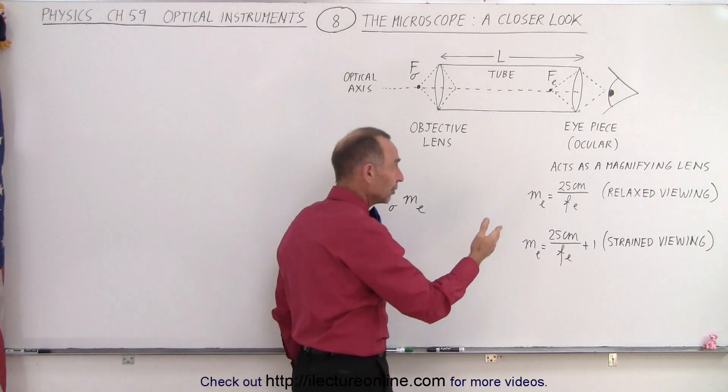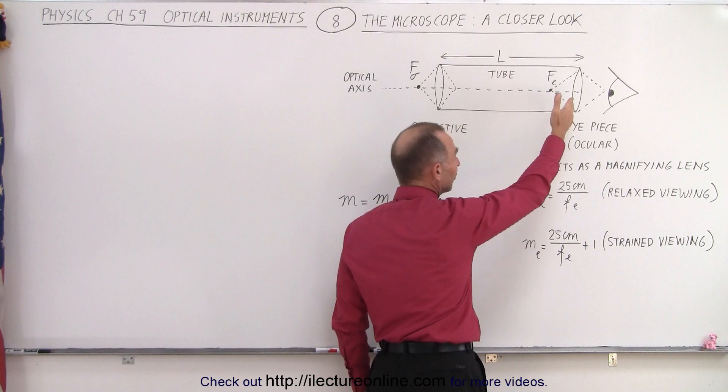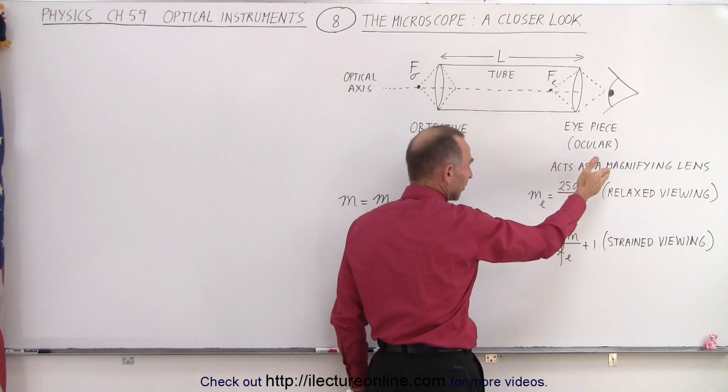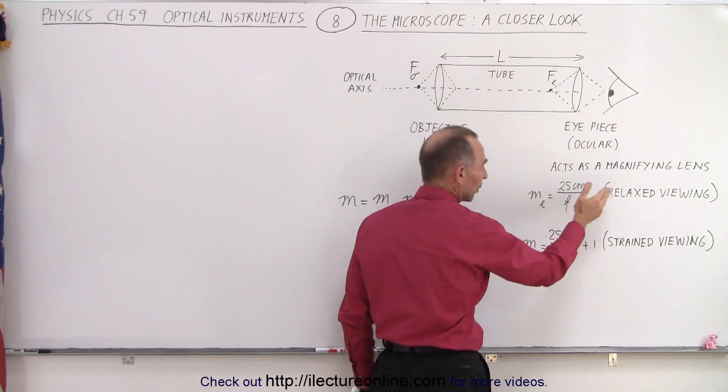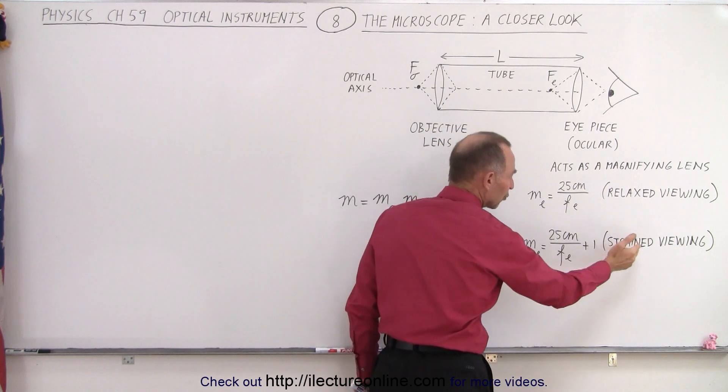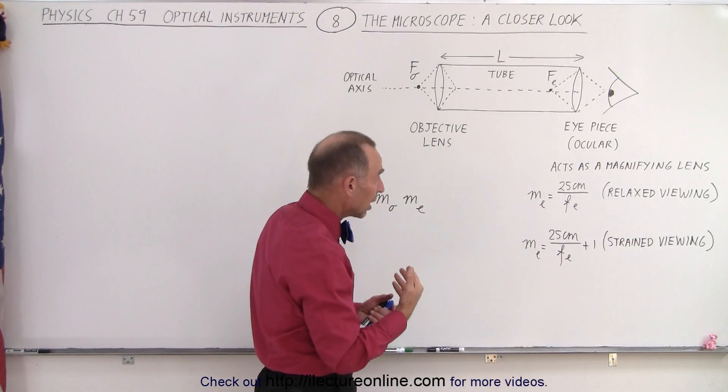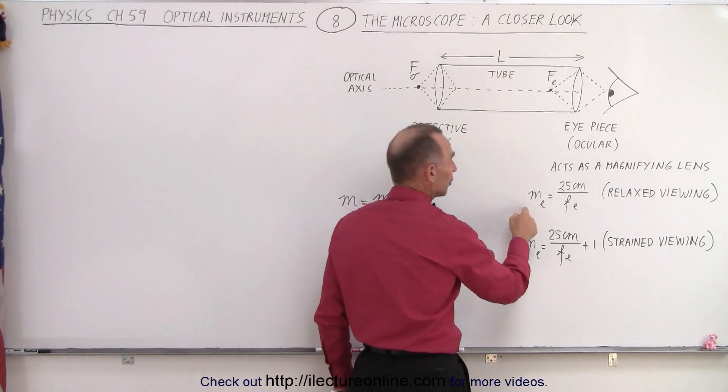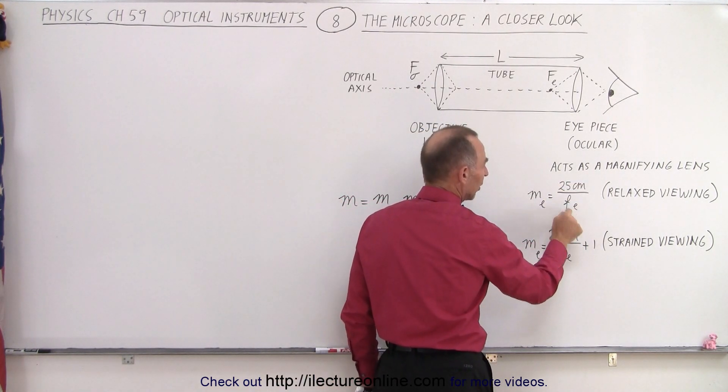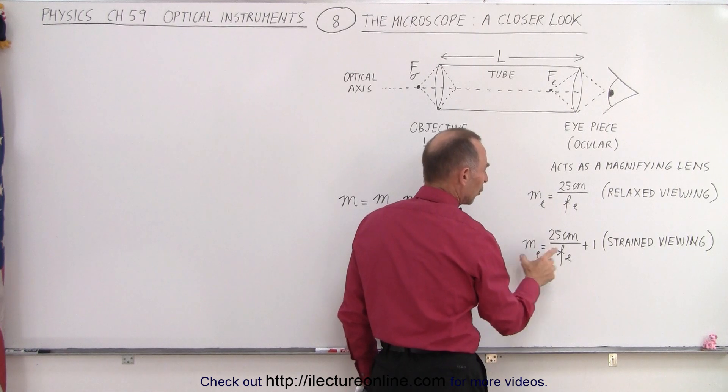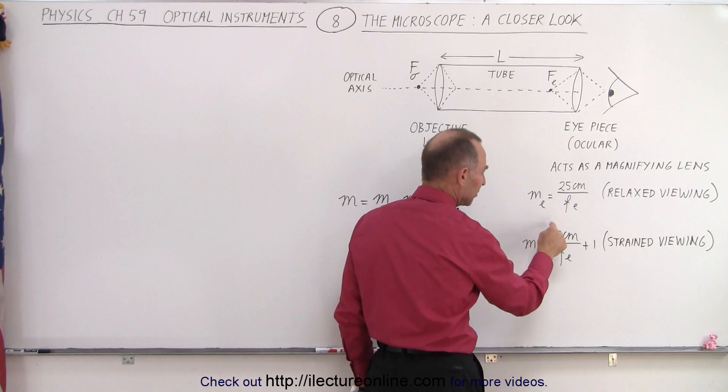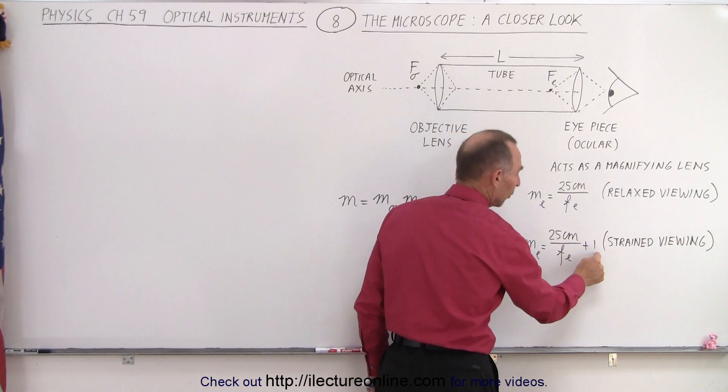Also notice that we saw in the previous videos that since the ocular acts as a magnifying glass, we can look through it either with relaxed viewing or with strained viewing, and that will alter the magnification of the ocular. In relaxed viewing it will be 25 centimeters divided by the focal length of the eyepiece, and for strained viewing it will be 25 centimeters divided by the focal length plus 1.